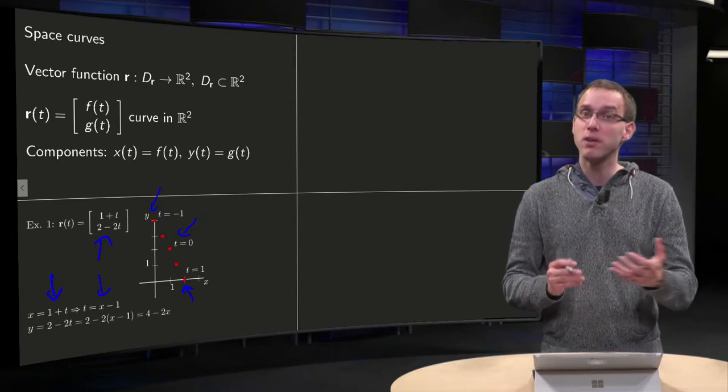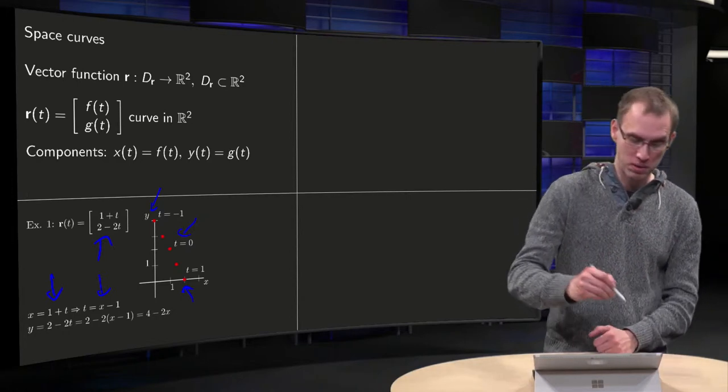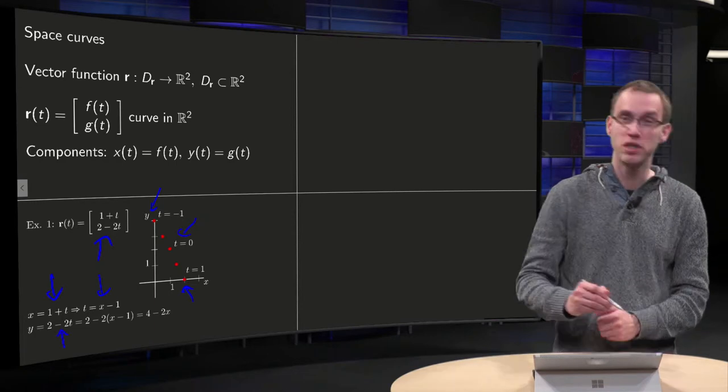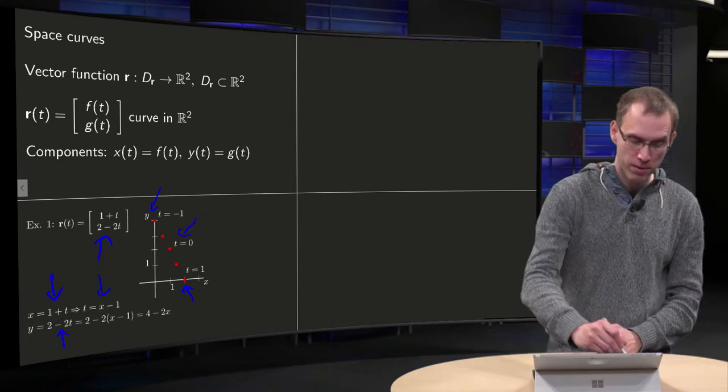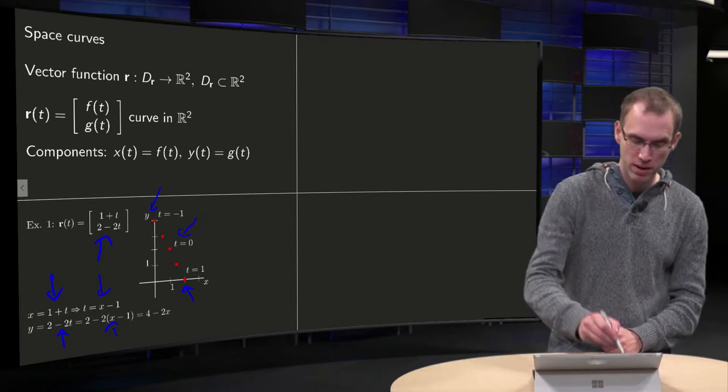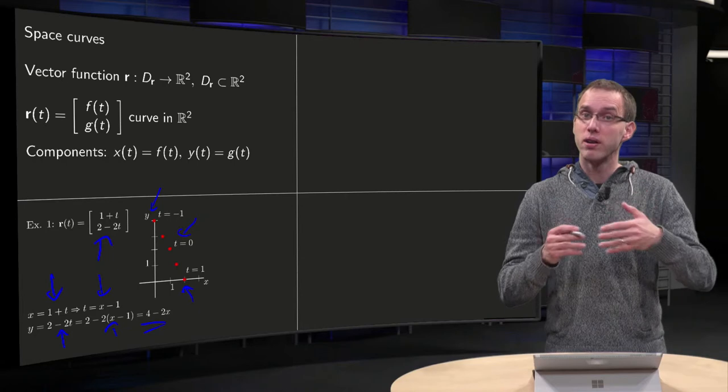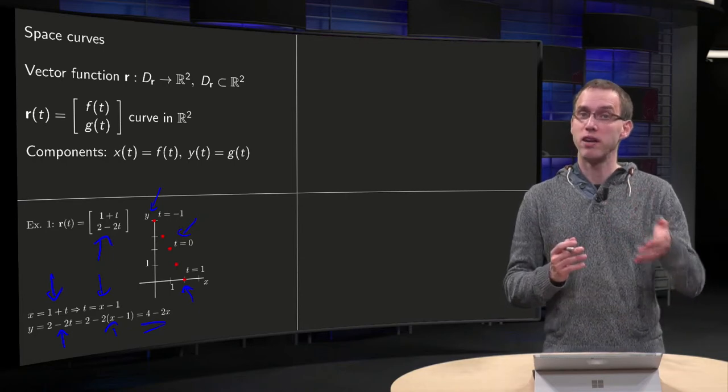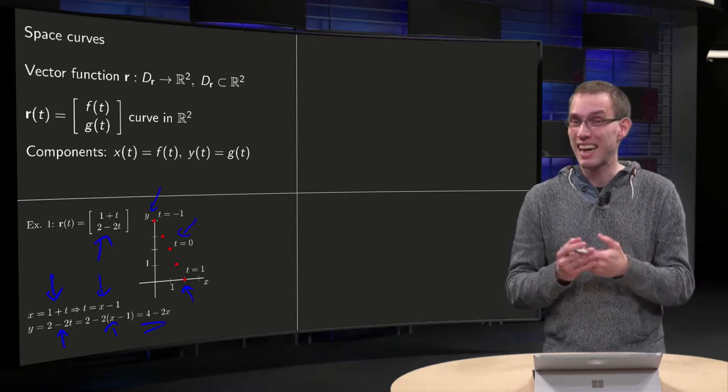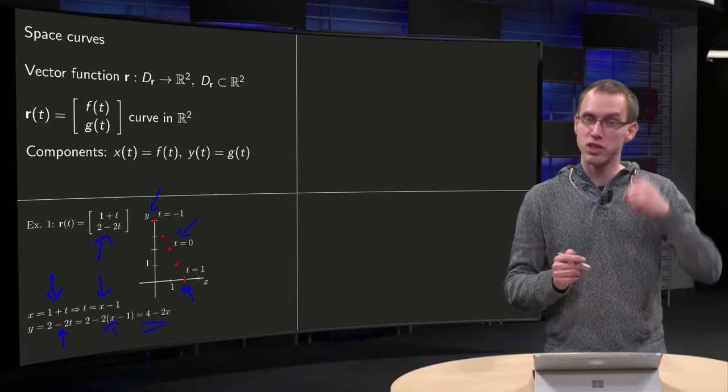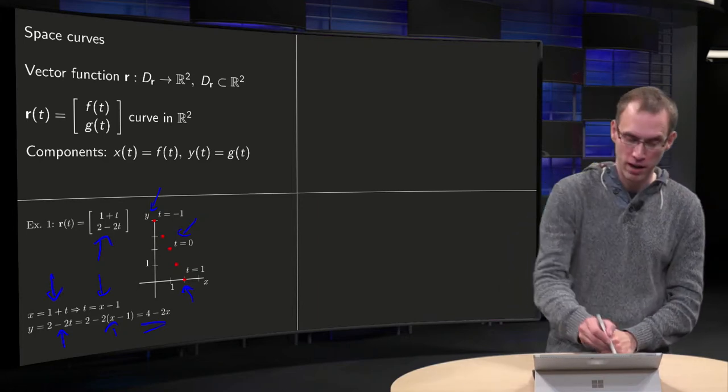And then we can plug that in into y and then we observe something. Because we have y equals 2 minus 2T, plug in the T, we get 2 minus 2 times x minus 1, which yields 4 minus 2x. So our equation yields y equals 4 minus 2x, which is exactly in line with intersection at 0, 4 and slope minus 2.